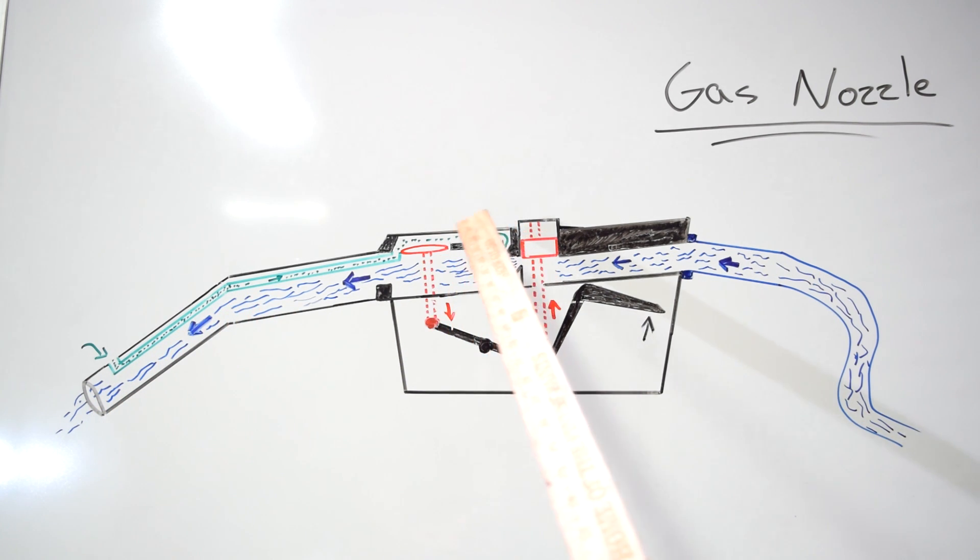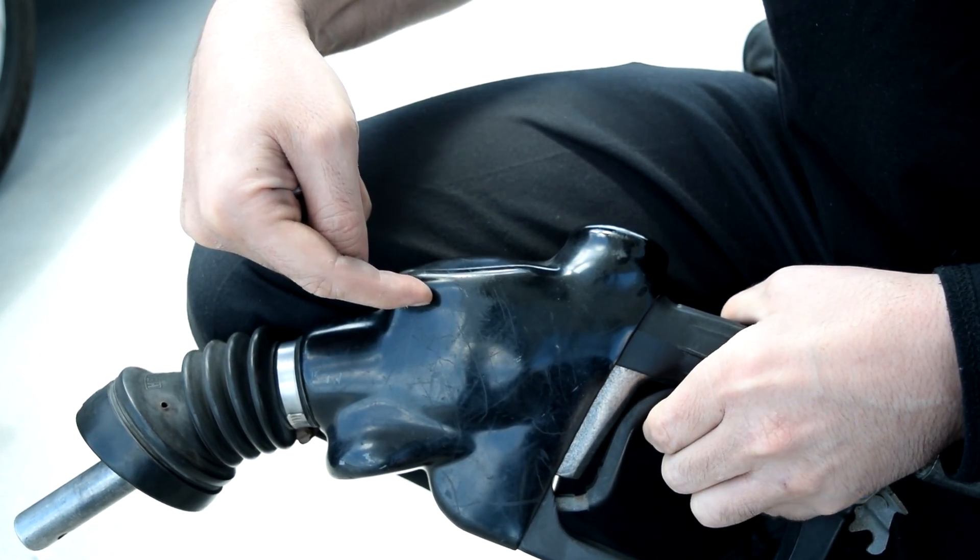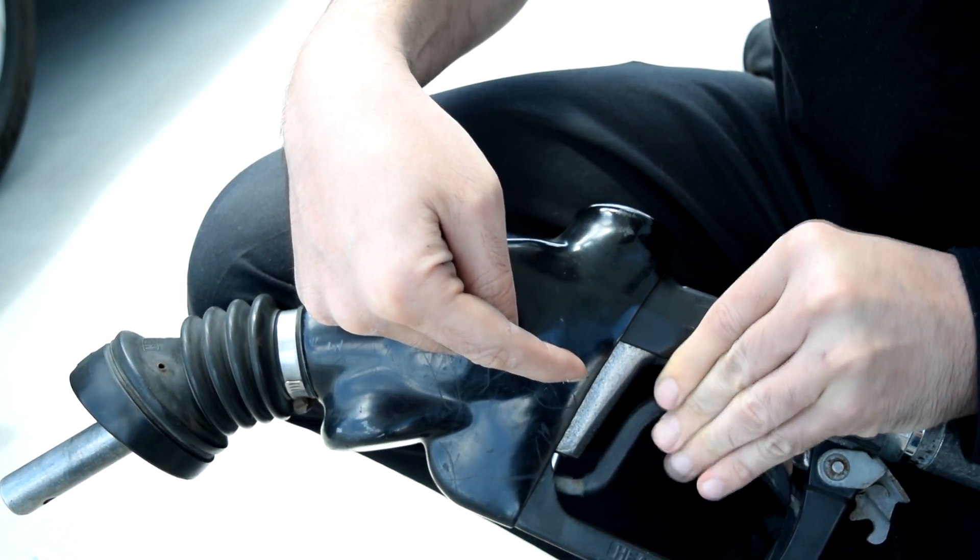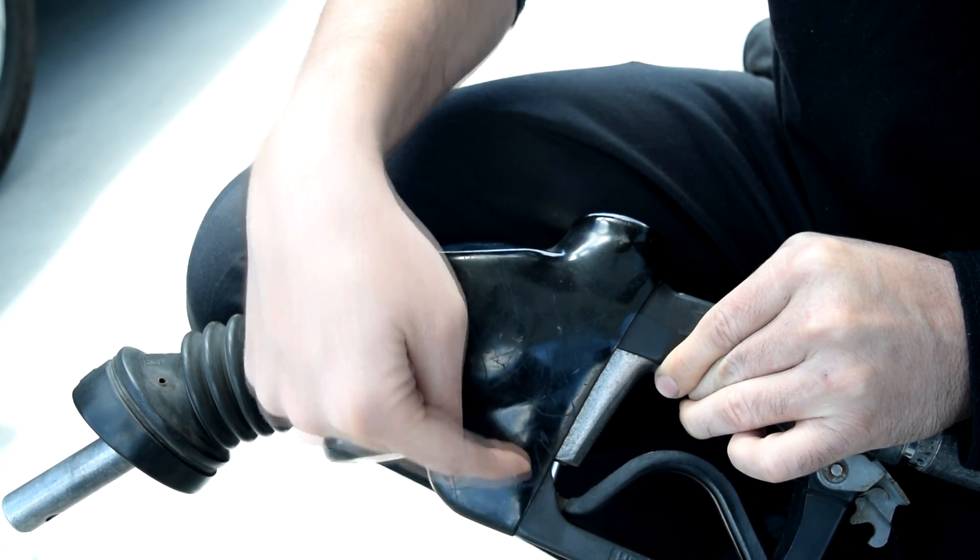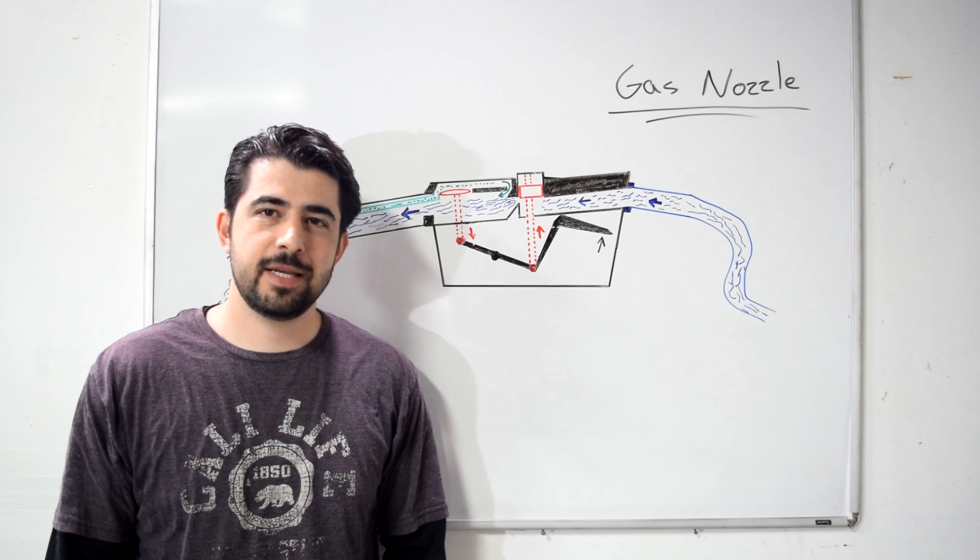As the diaphragm moves up on this side, it pulls down on the handle, releasing the main valve and blocking off the flow of fuel through the nozzle. That's all there is to it—pretty complicated and interesting if you ask me. But have you ever had this happen?